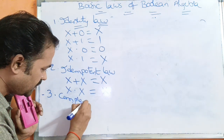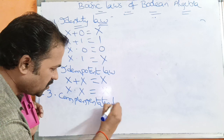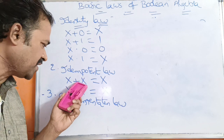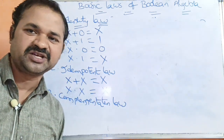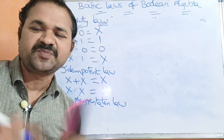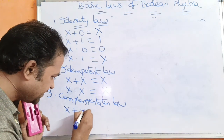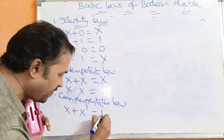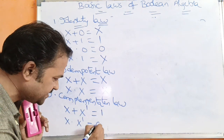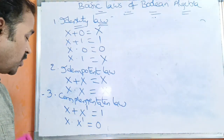The next law is complementation law. Here also we have two rules. First, based on OR operation: x plus x-bar equals 1. Second, based on AND operation: x dot x-bar equals 0.